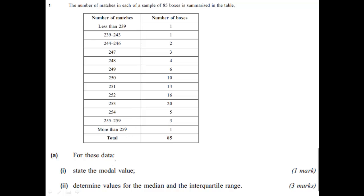The first thing we are asked to do is to state the modal value. The modal value is the most common. If we look in our list here we can see that the biggest number here we have 20 and that is in boxes with 253 matches. So the first thing we would do is write here 253. So the modal value is 253.